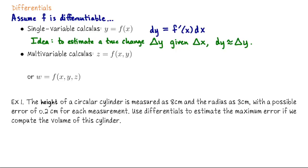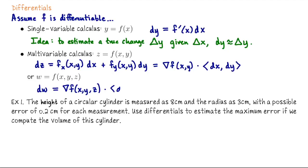In multivariable calculus, if z = f(x,y), then the differential dz = (∂f/∂x)dx + (∂f/∂y)dy, which we can write as the gradient of f dotted with ⟨dx, dy⟩. Similarly, if w = f(x,y,z), then dw = ∇f · ⟨dx, dy, dz⟩.